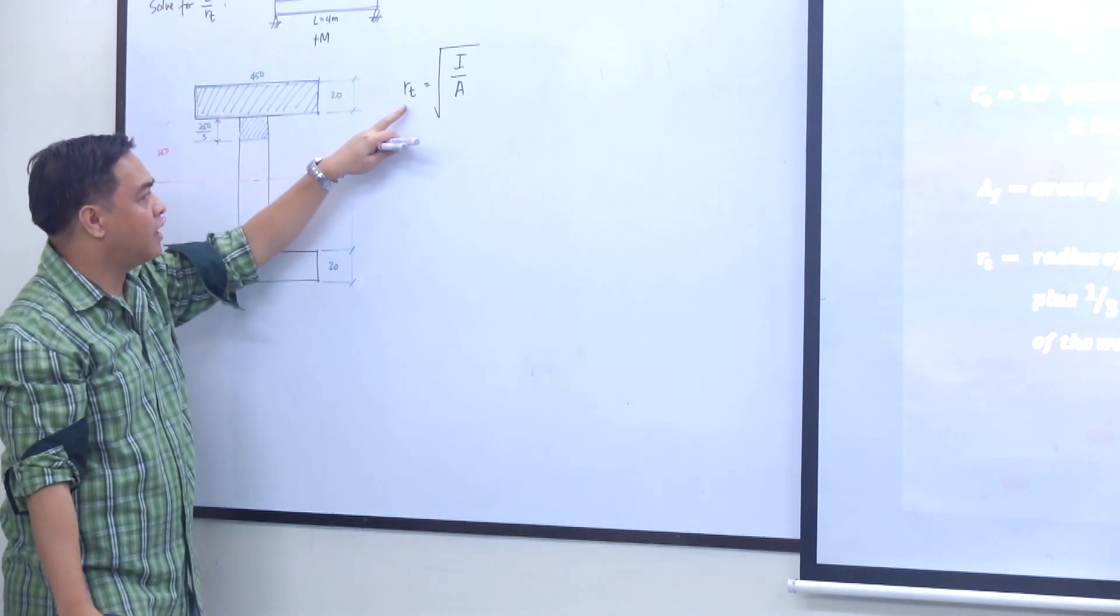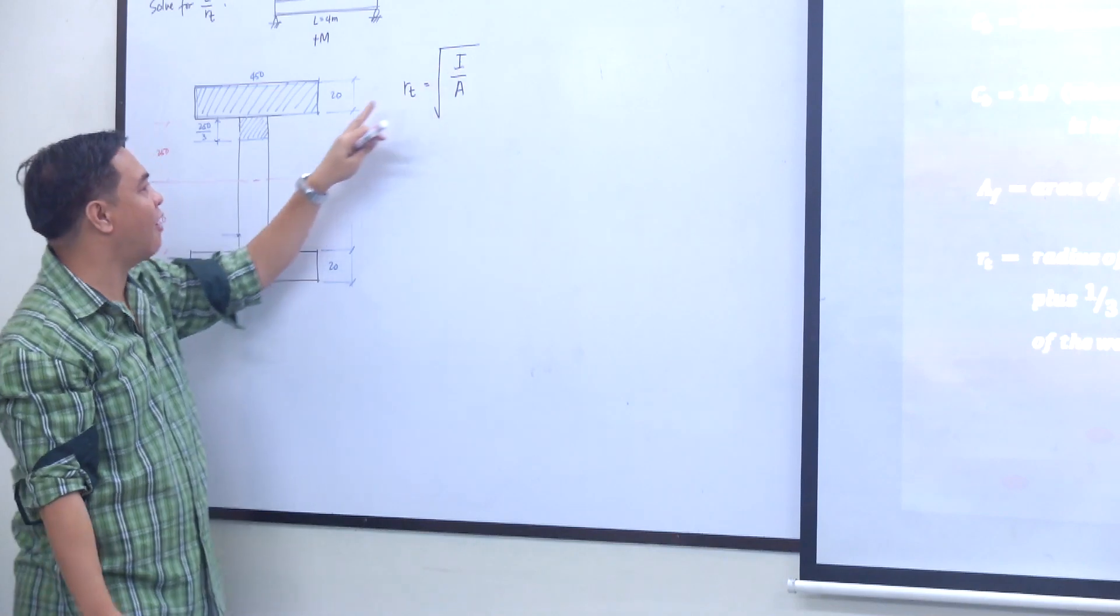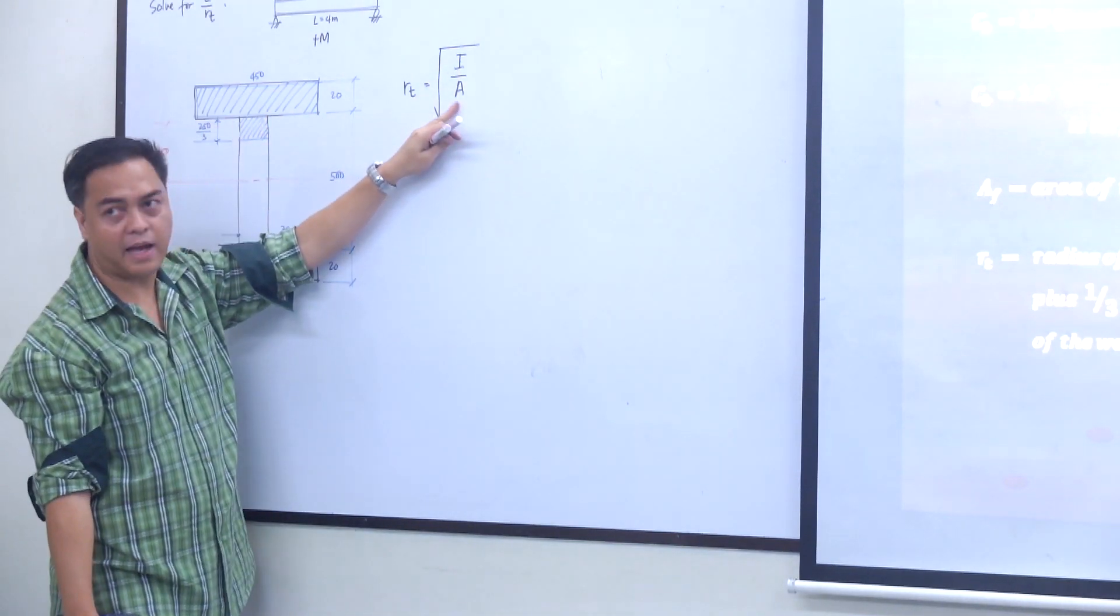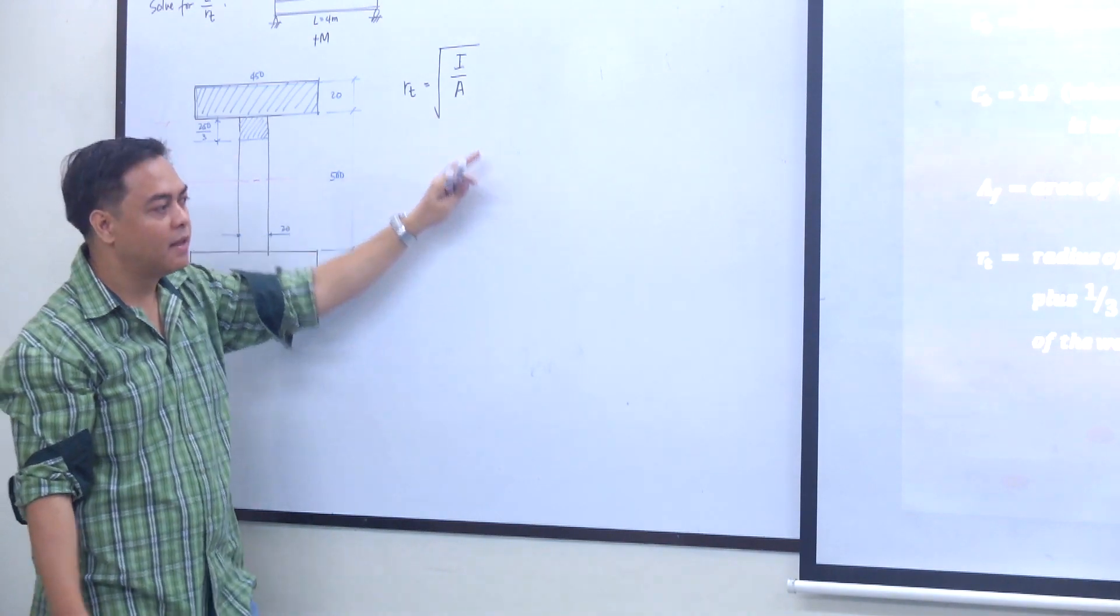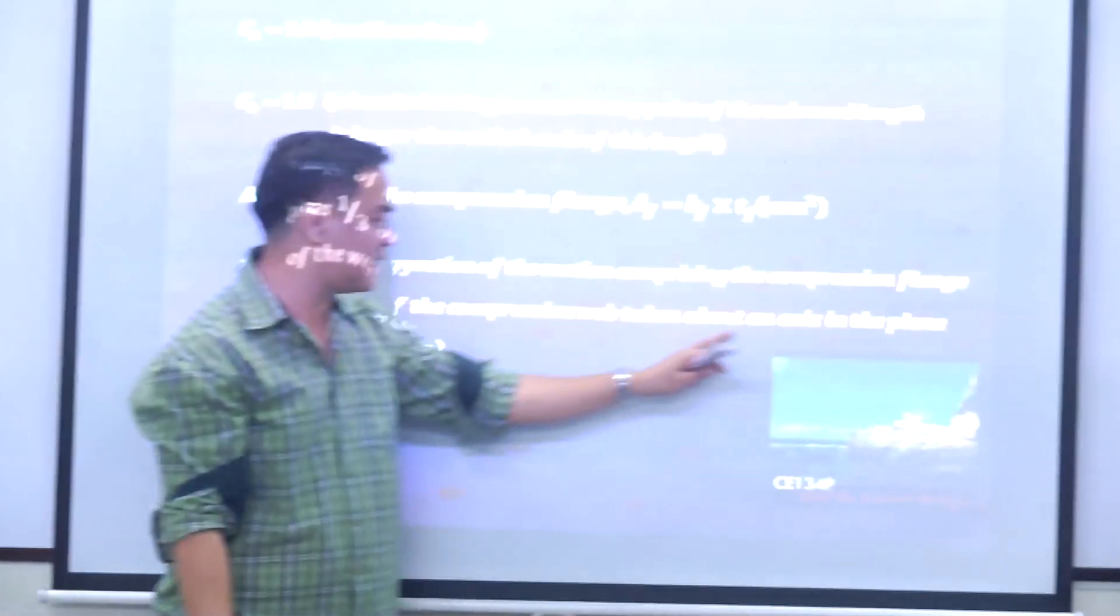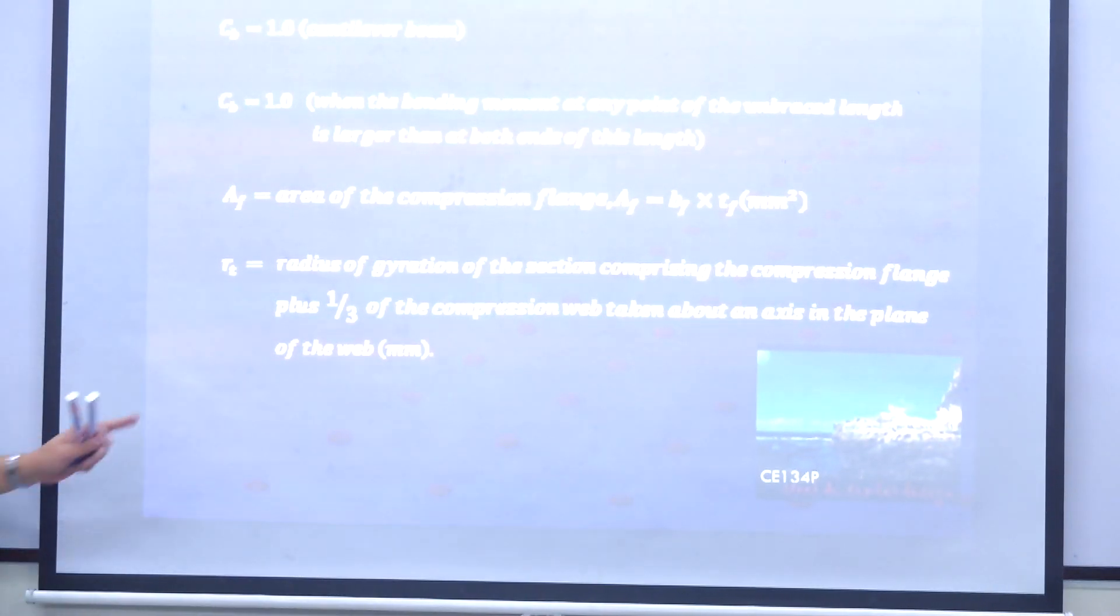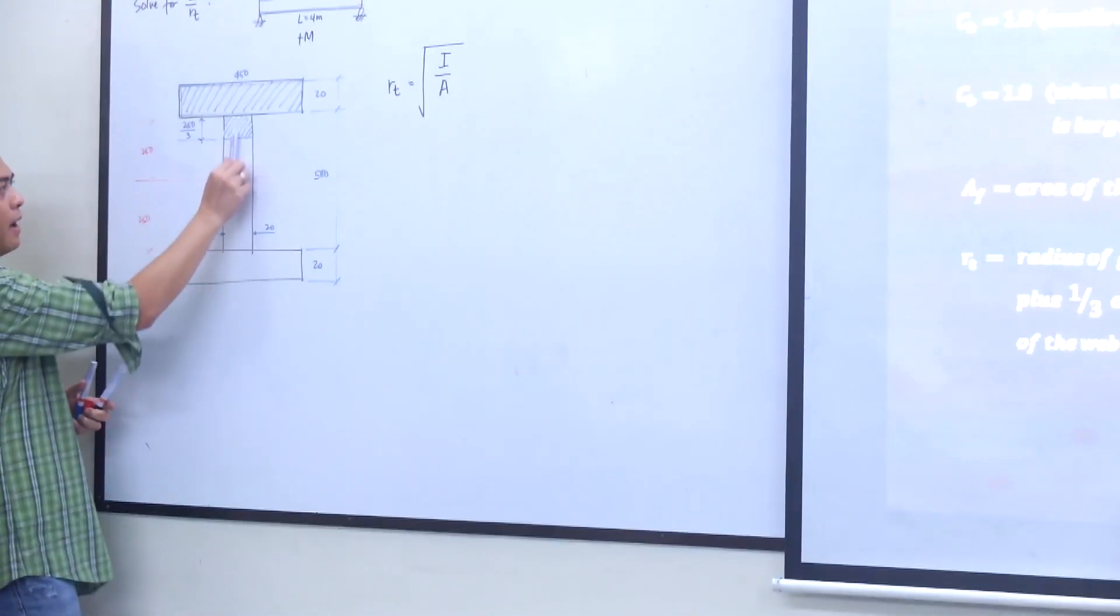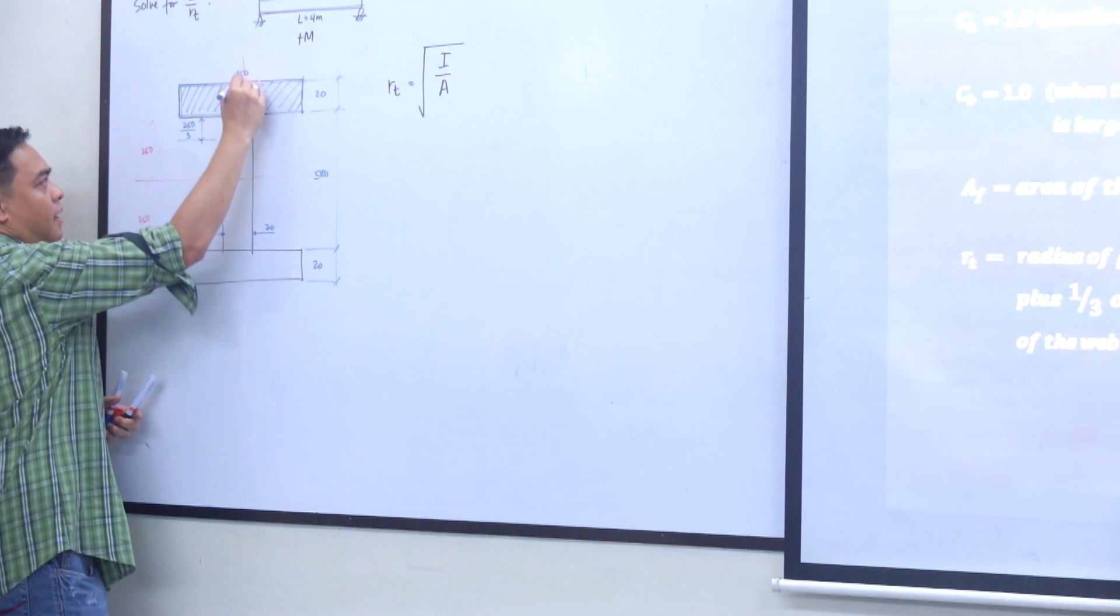To solve for R sub D, we need the moment of inertia of that shaded area as well as the area, taken above an axis in the plane of the web. Where is the axis in the plane of the web? Here is the web. So the axis would be here.